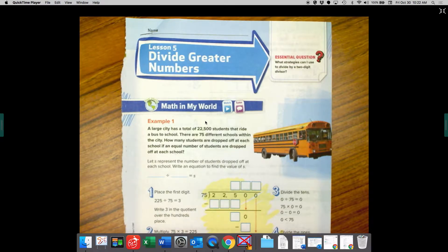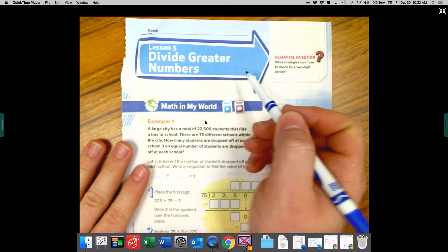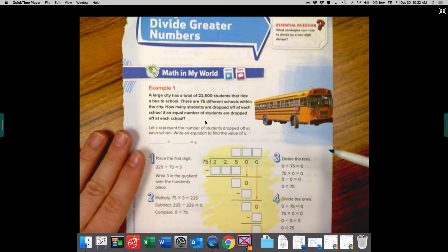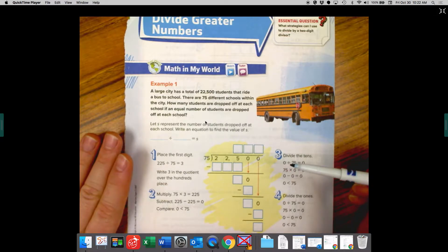So if you take a look, lesson five, divide greater numbers. I don't want you to get scared today because some of the numbers are getting quite large, but we know that if we follow our Does McDonald's Sell Burgers Raw acronym, it'll help us get through any problem.